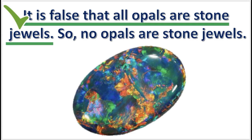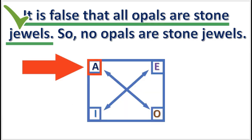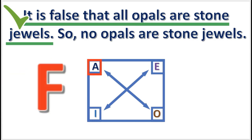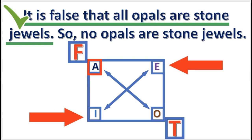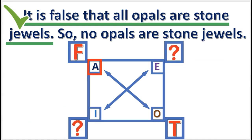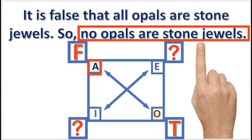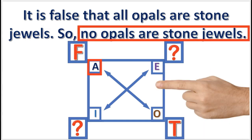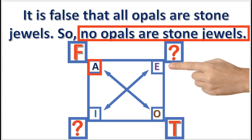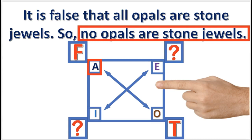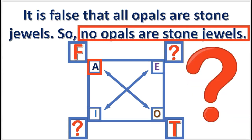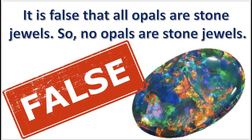Here's another inference. As usual, we assume that the premise is true. The premise asserts that an A proposition is false, so we enter an F above the A in the square. Next, we see that since A is false, O is true. E and I have undetermined truth value, as no other inferences are possible. Finally, we check the conclusion. The conclusion claims that the E proposition is true. But when we look at the square, we see that the E proposition has undetermined truth value. So the inference is invalid.